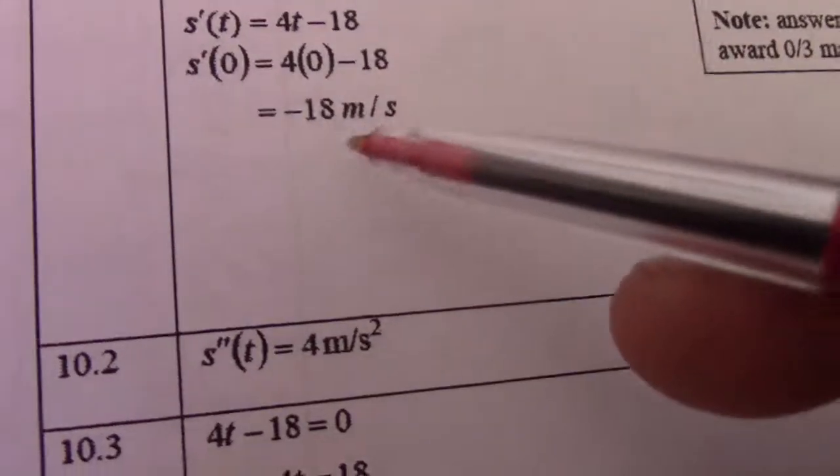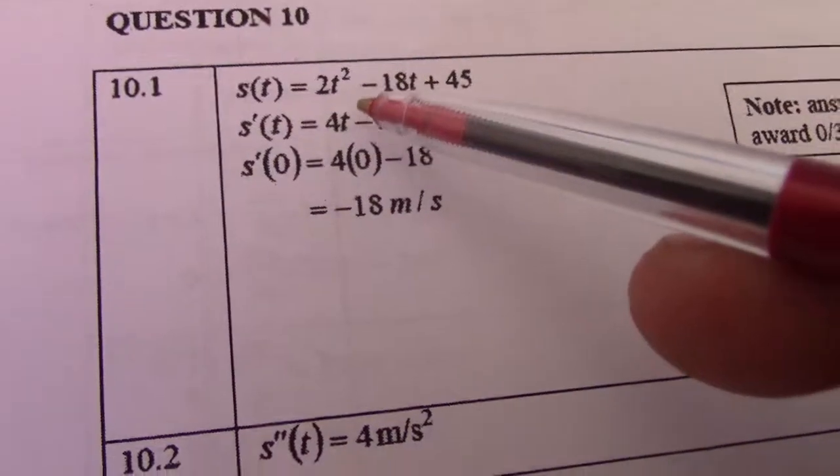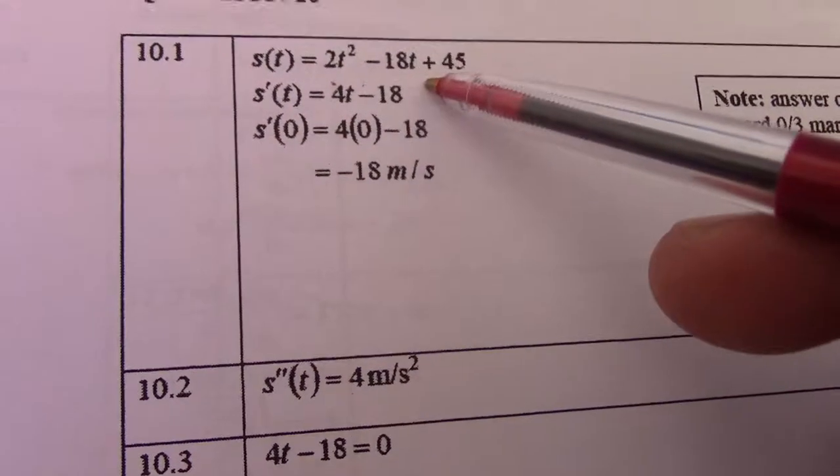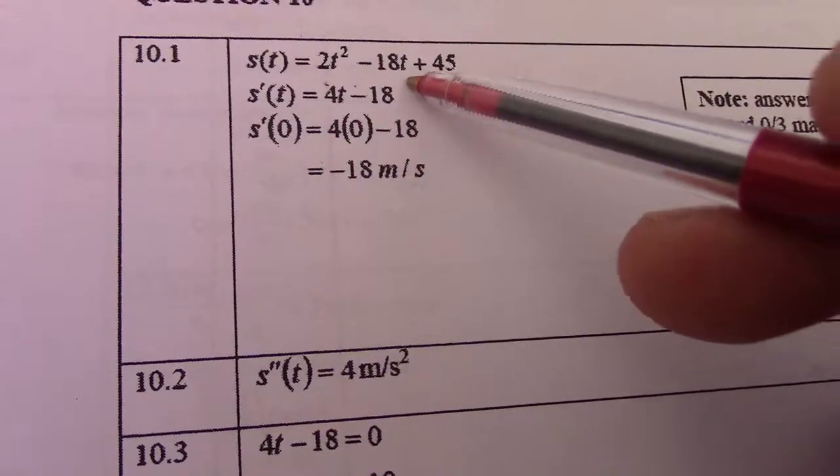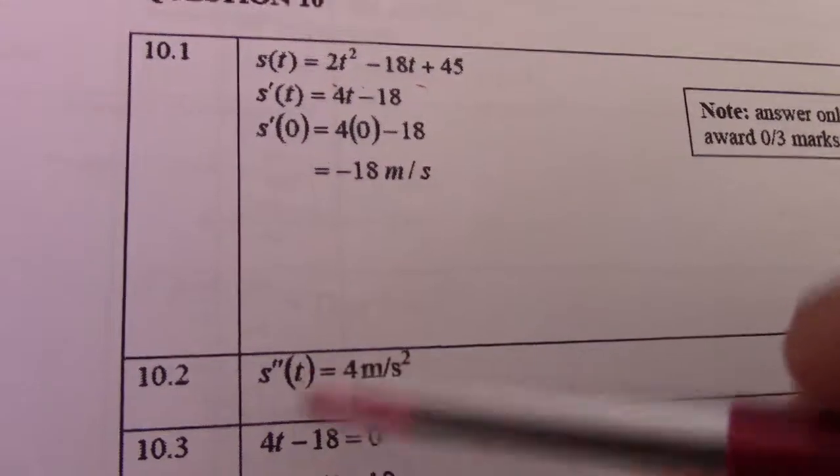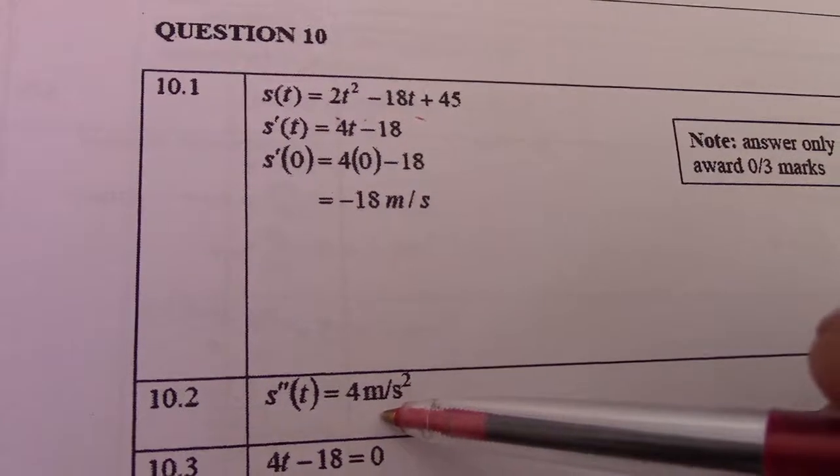So, if I find the second derivative of that, 1 times 4 would simply give me 4. The second derivative of 18 becomes 0. So, there, second derivative equals 4 meters per second squared.